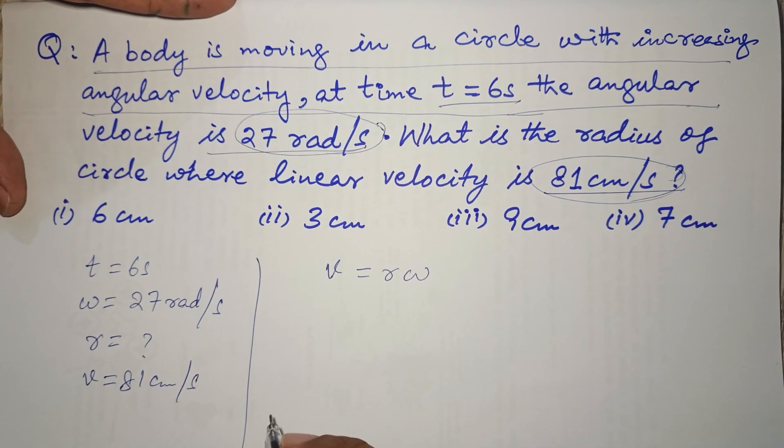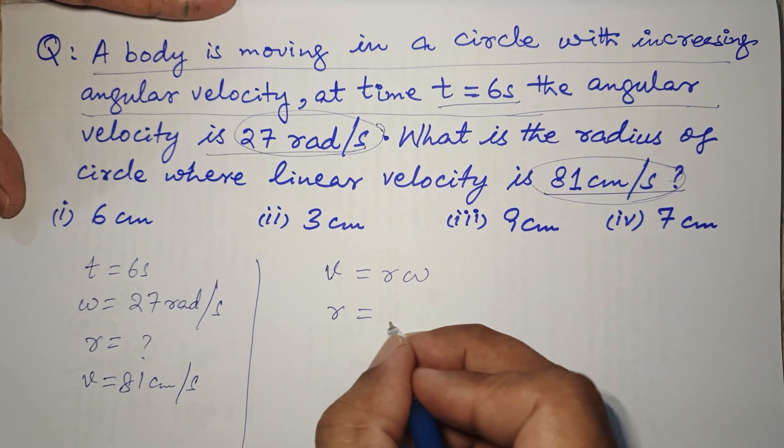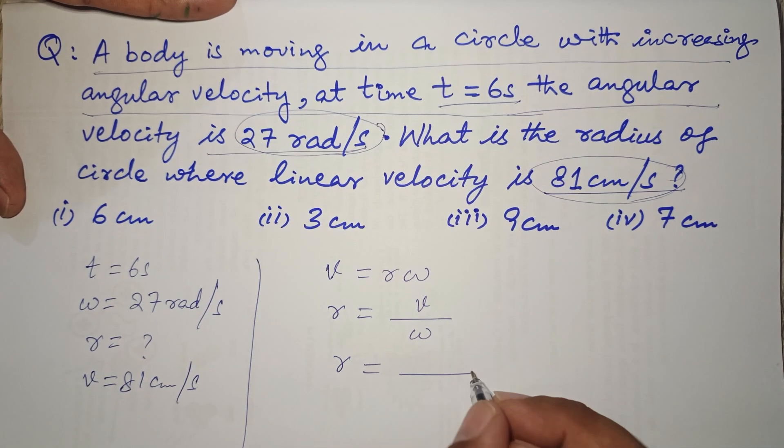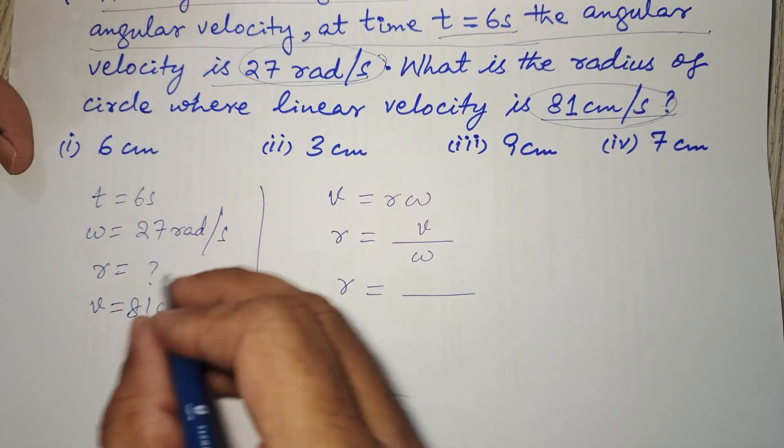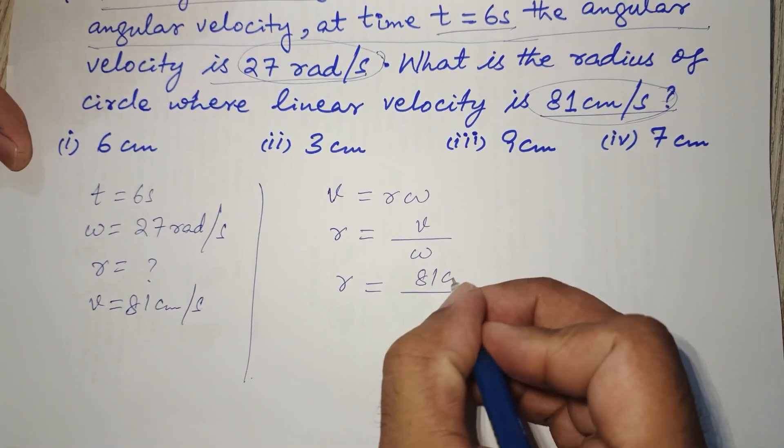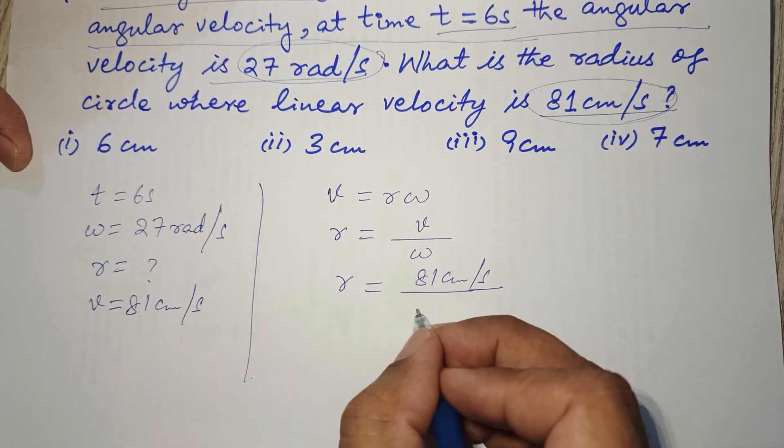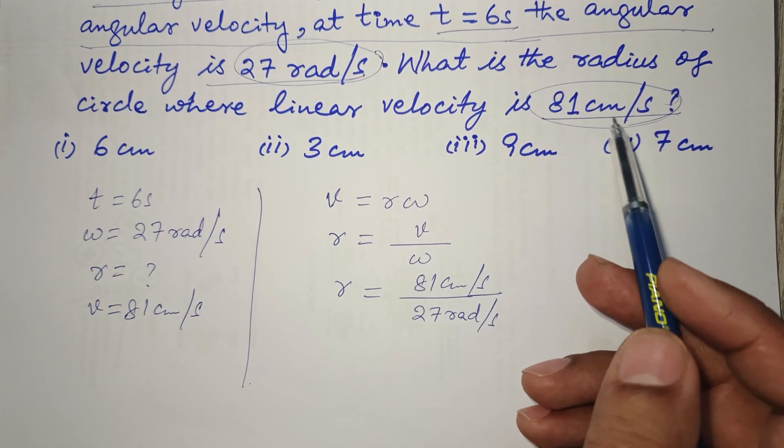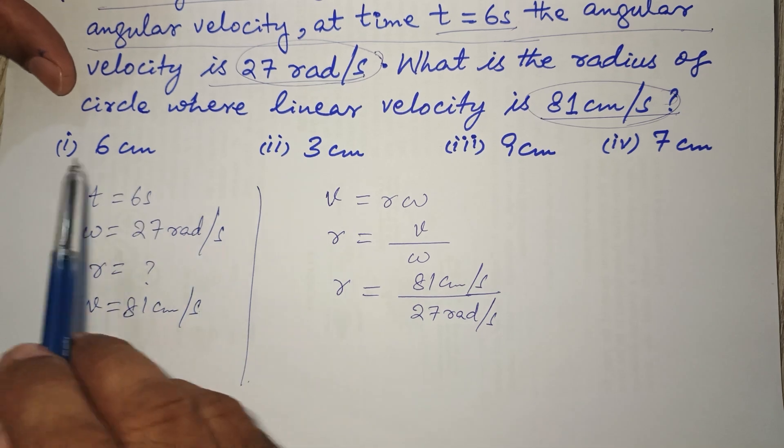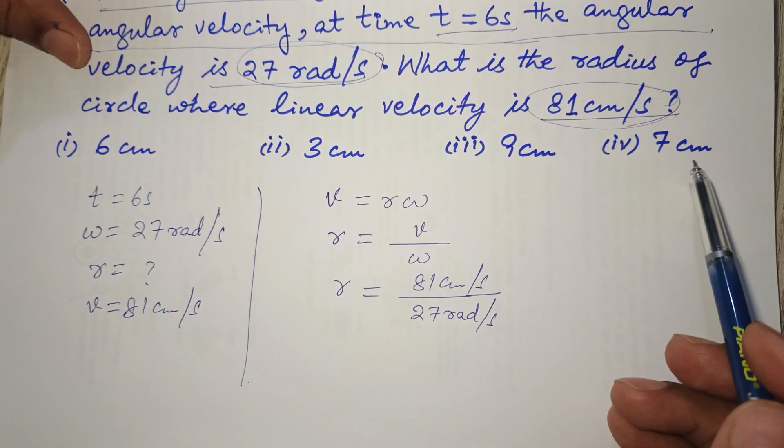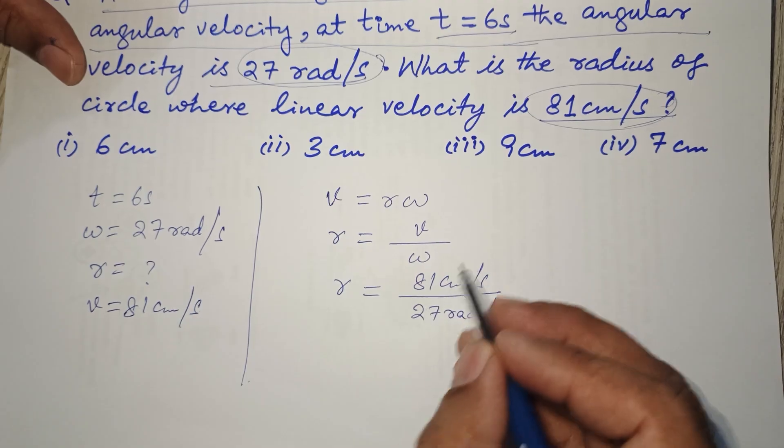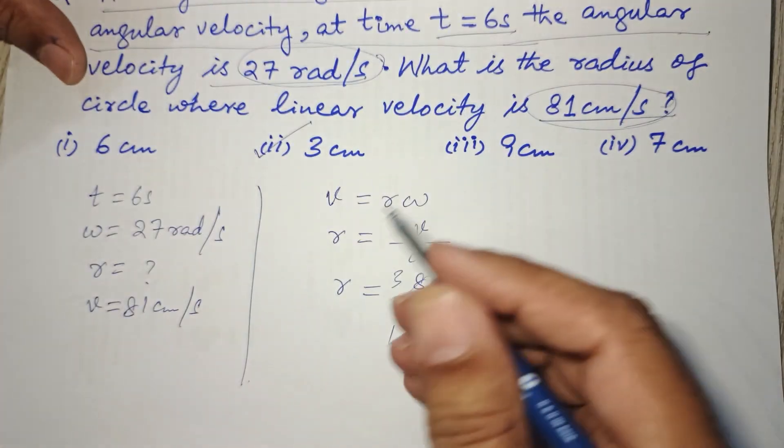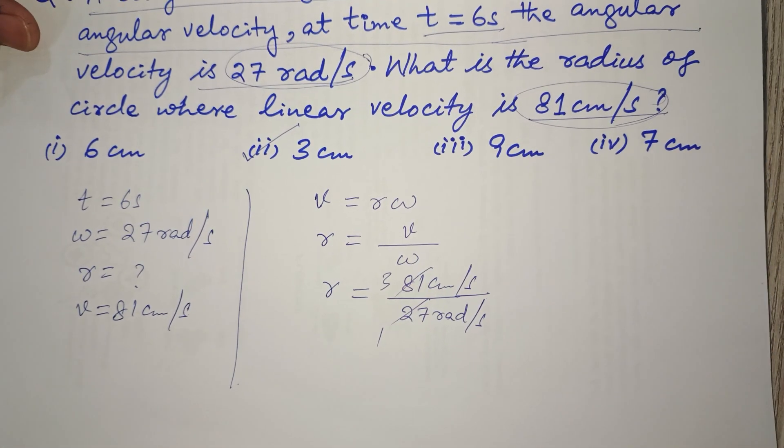We know that the relation between v and omega is v equals r omega. We have to find out r, so r will become v over omega. V is 81 centimeters per second and omega is 27 radians per second. We didn't change this centimeter into meters because all the options are given in centimeters. So r will become 81 over 27, which is 3 centimeters. This is the correct answer. Take care, thank you, we'll meet with the next test.